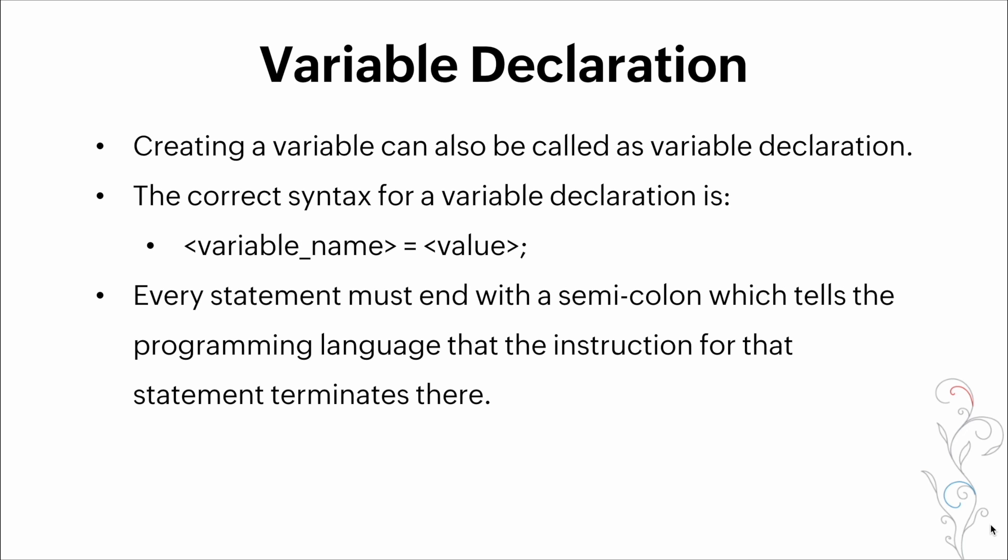Now let's go back to variables and talk about what variable declarations are. When creating a variable, it could be referred to as variable declaration. The correct syntax for variable declaration is as follows: it requires a variable name, an equal sign to assign a value to it, and then the value itself with a semicolon at the end. Every statement must end with a semicolon which tells the programming language that the instruction for that statement terminates there.